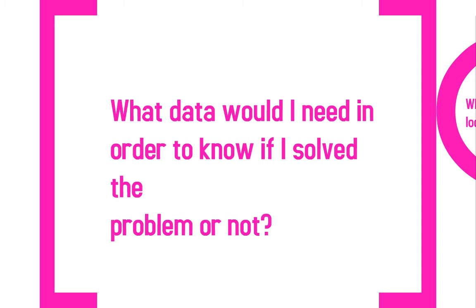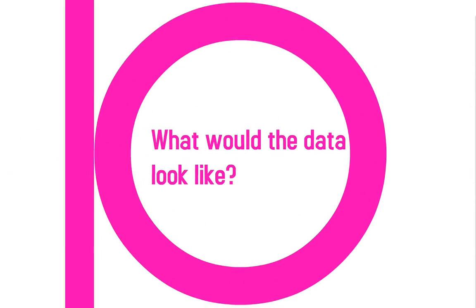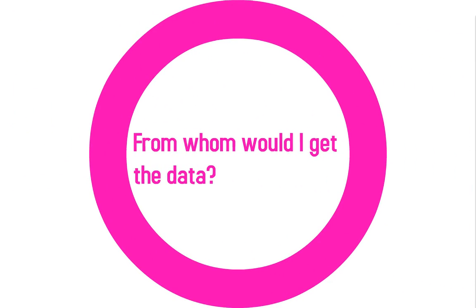Then we move to the section on data. You need to think about what kind of data you would need in order to know if you solved the problem or not. What would that data look like? Again, think about that in observable, measurable terms. From whom would you get the data? You might pull data from students by asking them questions, from teachers via a survey, from parents through an interview, from permanent products like student work samples, or through classroom-based observations.